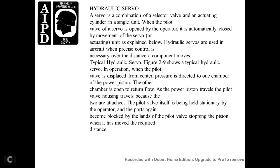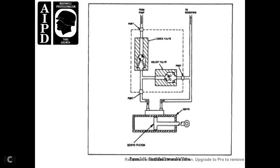In operation, with the pilot valve displaced from center, pressure is directed to one chamber of the power piston; the other chamber is open to return flow. The power piston travels, carrying the pilot valve housing with it because the two are attached. The pilot valve itself is held stationary by the operator. The ports become blocked by the lands of the pilot valve, stopping the motion when the piston has moved the required distance.